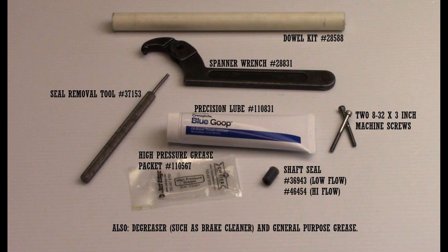Required equipment includes a 1 inch dowel, a spanner wrench, a seal removal tool, precision lube, two 832 screws, high pressure grease, and the swivel shaft seal.